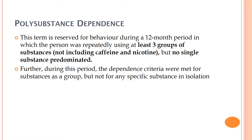During this period, the different dependency criteria are met for the substances as a group but not for any specific substance in isolation. The individual is totally dependent on the group, not on a single predominant substance. The exclusion criteria specify that caffeine and nicotine are not included.